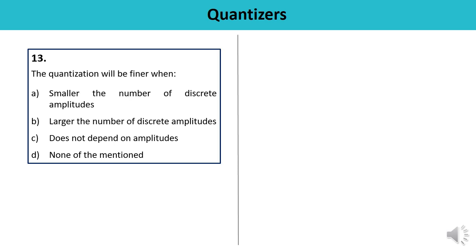Question 13: Quantization will be finer when — smaller the number of discrete amplitudes, larger the number of discrete amplitudes, does not depend on amplitudes, or none? Larger the number of discrete amplitudes, finer will be the quantization. The answer is B.